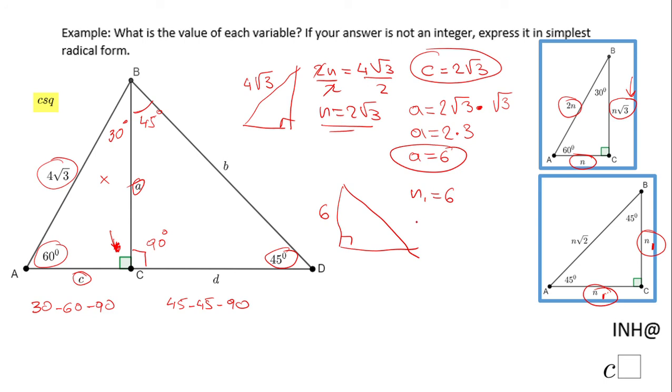And if you notice, the other leg is the same. So in our case, the other leg will be d. d will be 6. And then the hypotenuse is n sub 1 times √2. So in our case, the hypotenuse b, which is this guy, will be that n sub 1, which is 6 times √2. And we finish this problem. We have all the variables.